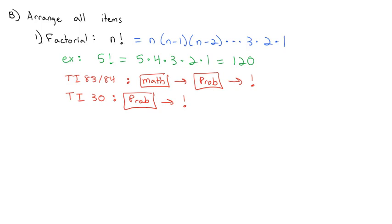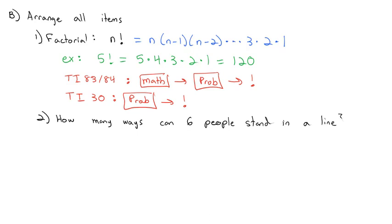We're going to use a couple of options today that are under that probability menu. Factorial is one of them. Let's use it to answer the question: how many ways can 6 people stand in a line? We want to arrange all 6 people, so we can use the factorial to calculate it — 6 factorial. When I do 6 factorial on my calculator, we get 720 for the total number of ways we can arrange 6 people in a line.